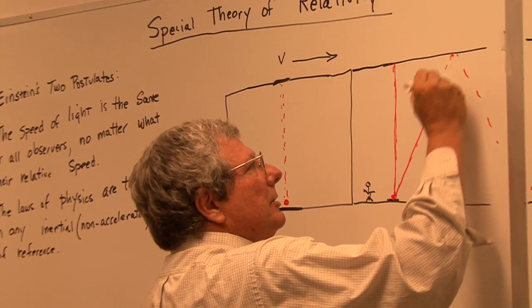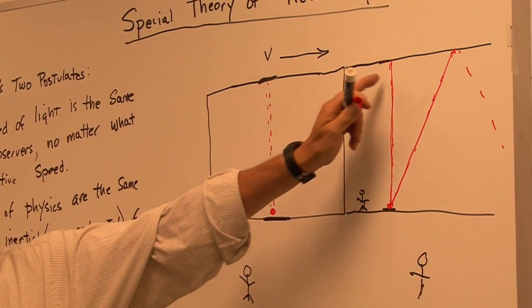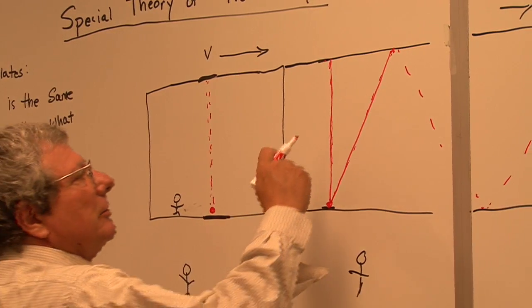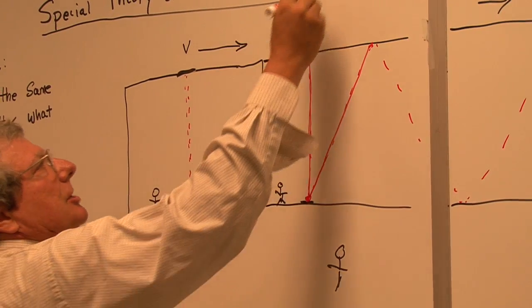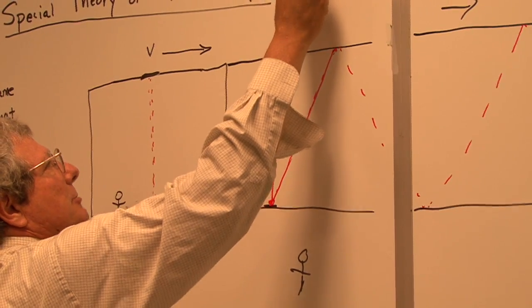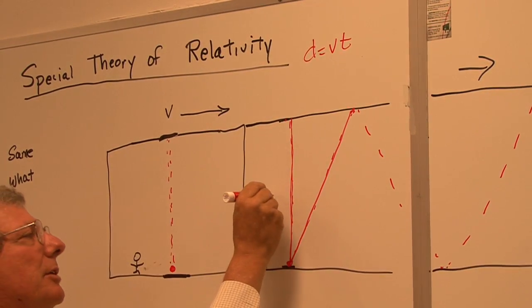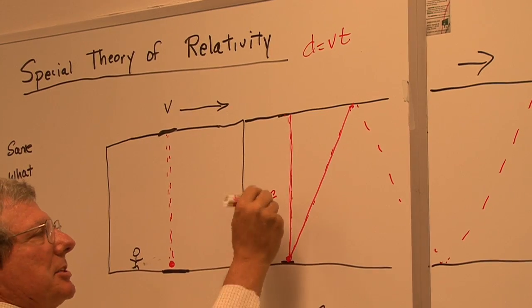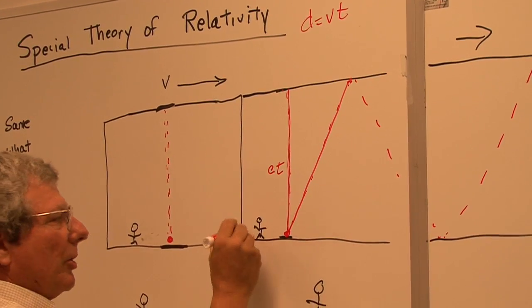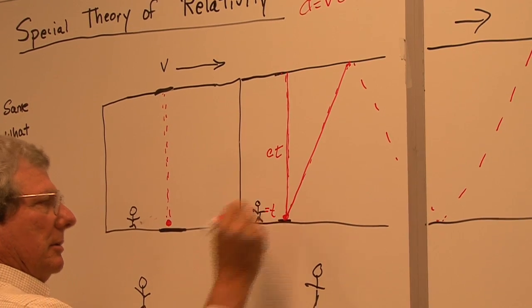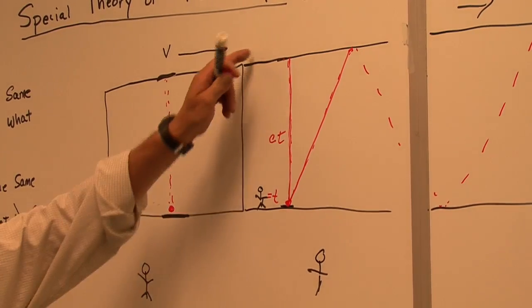What we're going to use here is we're going to put values for the distances of these legs of this triangle. The leg of this, since distance equals velocity times time, this distance here would be the velocity of light, which is c, times the time, and I'm going to use the time of this guy to be lowercase t. That would be the distance from here to here.